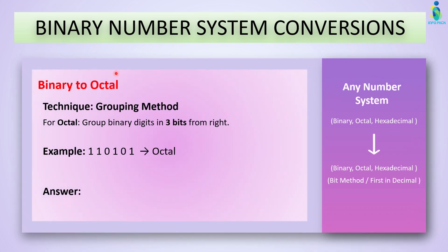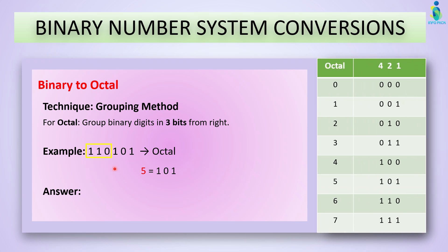To convert from binary to octal, first group the binary digits into three bits from the right side. The first group is 101, which is 5 in octal. The next group is 110, which is 6 in octal. Using the octal table — which has three bits with powers 2⁰, 2¹, 2² giving values 1, 2, 4 — we combine the positional bits. So for 5 we turn on bits 4 and 1, and for 6 we turn on bits 4 and 2. The final answer is 65 in octal.